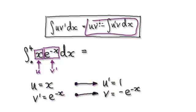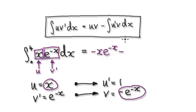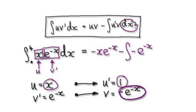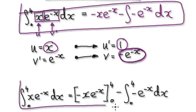Now just blindly follow the formula. We've got u times v, which gives us negative x·e to the power of minus x. Then we subtract the integral of u prime times v, which is e to the power of minus x dx.